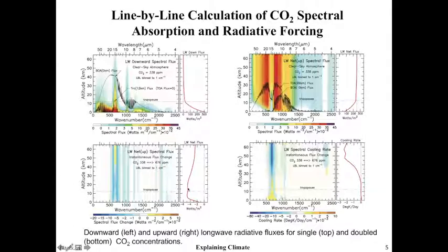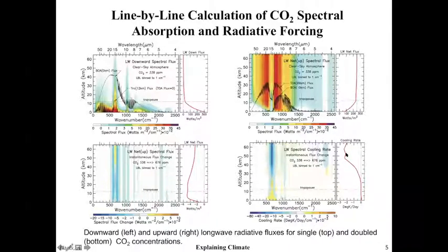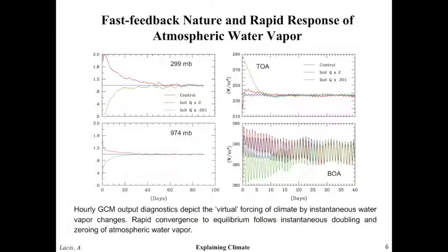The radiative forcing is about 4 watts for double CO2, and this translates into a cooling rate: cooling happens more at the top of the atmosphere with slight warming at the surface. That's how the temperature changes. The third important thing is water vapor and the Clausius-Clapeyron relation. We did a GCM experiment where we instantaneously doubled the amount of water vapor in the atmosphere, and another experiment where we totally zeroed it out and let the model run.